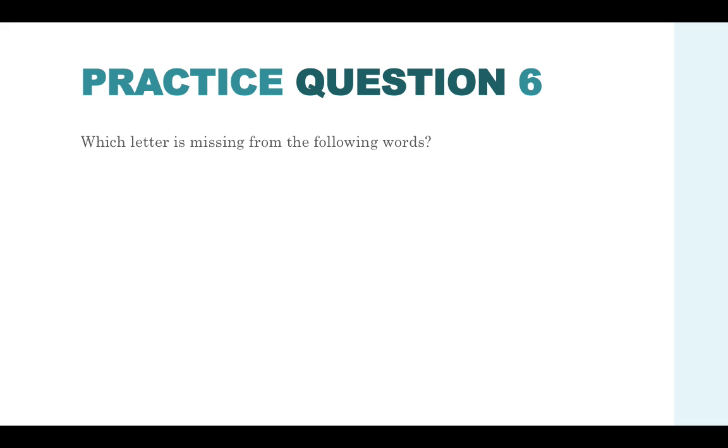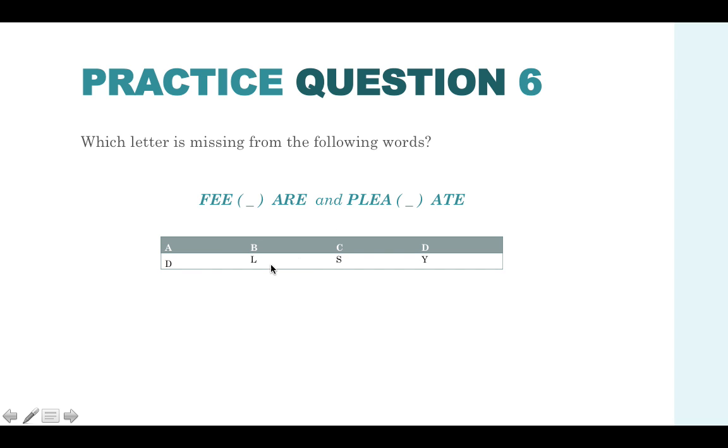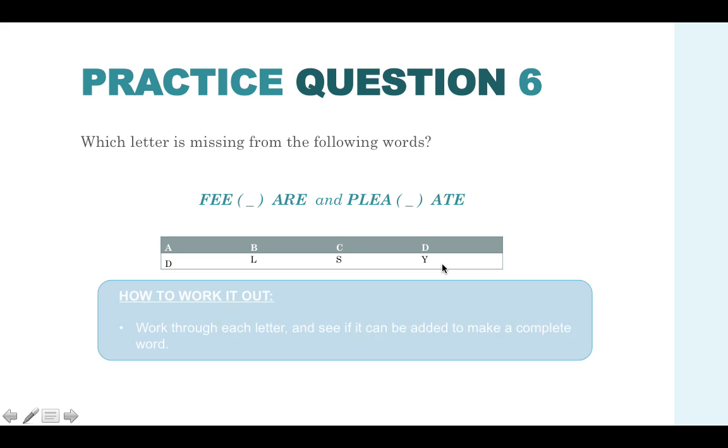Practice question six. Which letter is missing from the following words? We have FEE and then the missing letter which begins the next word, and PLEA and then we have the missing letter which begins the next word and ATE. We've got the letters D, L, S and Y. Work through each letter and see if it can be added to make a complete word.